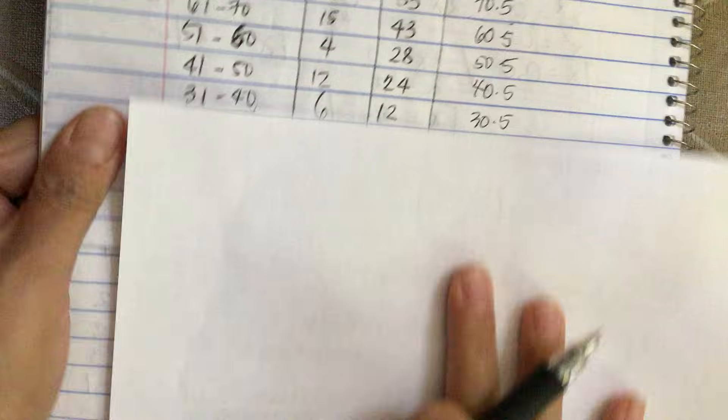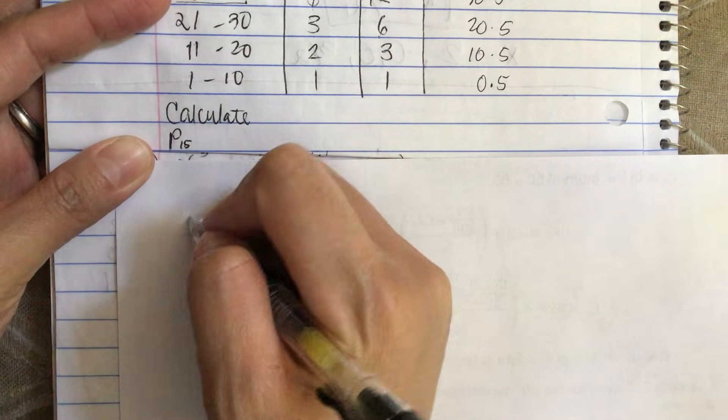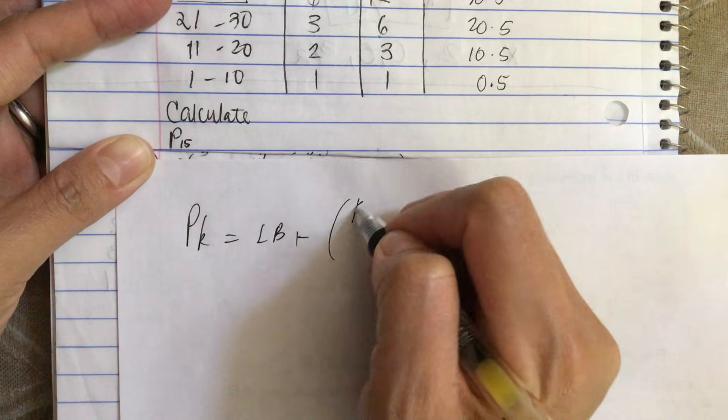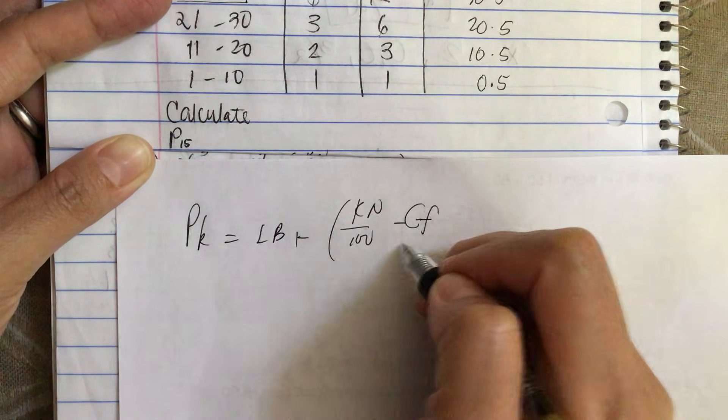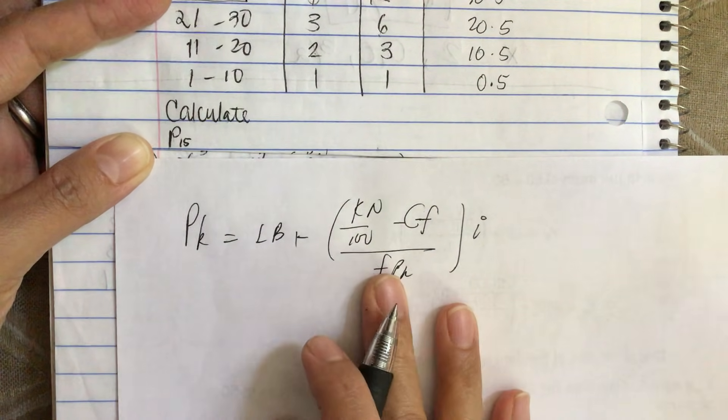Now let's write down our formula. So P of k is equal to LB plus (kn over 100 minus cf) over f_pk, multiply by i.